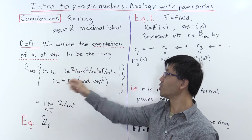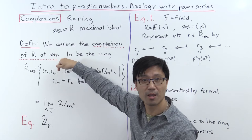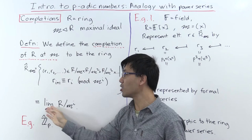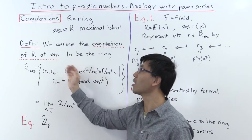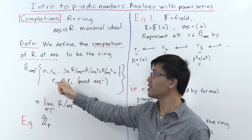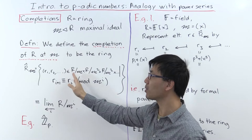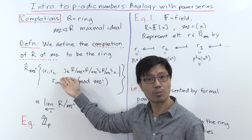An important point: if you know what R_{i+1} is, when you reduce it modulo M to the i, that gives you R_i. So if you know the i-th term, that gives you all the previous ones. To a certain extent, the first few terms are already determined by the ones after it. That's why you have this inverse limit notation — the tail tells you what's going on, and the system is over-determined. You don't need to give the first few terms once you have the later ones.